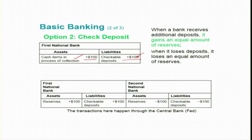The cash items in process of collection will subsequently become reserves when the money is collected — the $100 becomes reserves for this bank. It also becomes a liability. So in the T-account, immediately upon depositing the check the asset side shows cash items in process of collection and the liability side shows checkable deposits, and subsequently the cash items become reserves while the checkable deposit remains in the depositor's name.